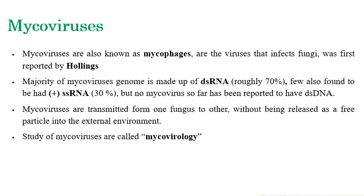To summarize: 70% of mycoviruses have a genome made up of double-stranded RNA, and 30% have a positive single-stranded RNA genome. No mycovirus has been reported so far that contains double-stranded DNA as genetic material. The study of mycoviruses is called mycovirology.